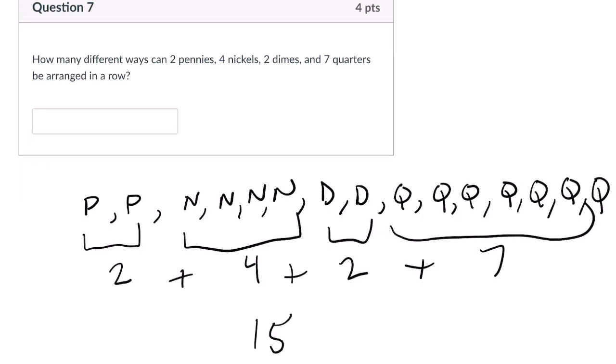Now, normally, if I said how many ways can you arrange 15 distinct items in a row, you would say 15 factorial. First, there's 15, you can choose 14 and 13, all the way down to one. But here,